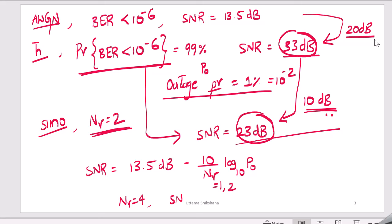You can see that when you increase the number of receive antenna further the SNR requirement also coming down from 23 dB to 18 dB. So now we know that we need to increase the number of receive antennas.